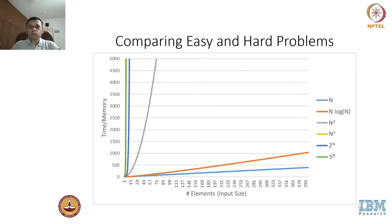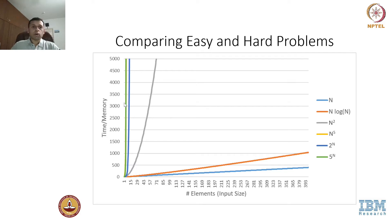Now let's add a few more functions. We will add another polynomial function, n to the power of 5, and then two exponential functions, 2 to the power n and 5 to the power n. These two functions are essentially off the charts — they shoot up immediately even for very low input size.